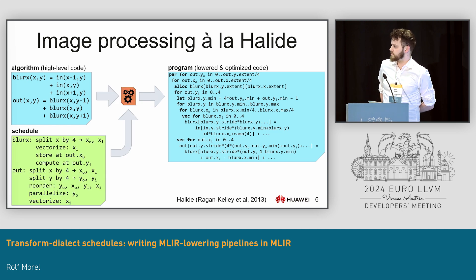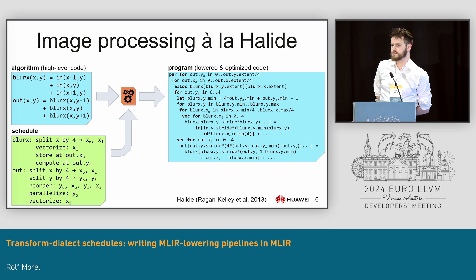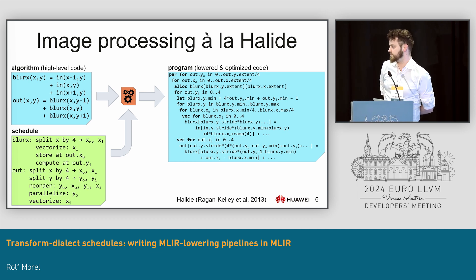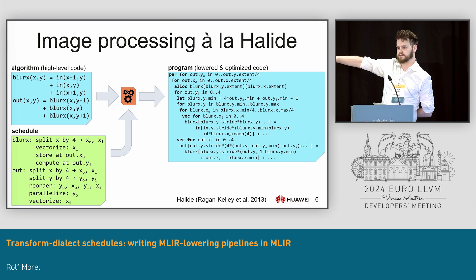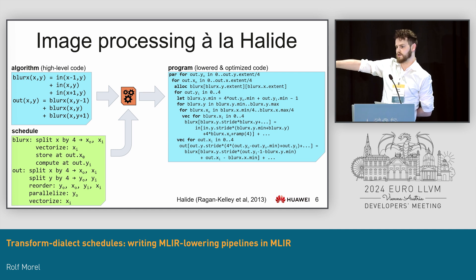If we apply this scheduling notion, the user would just care about writing the high-level algorithm — the thing at the top left in blue — and they would also write a schedule. The schedule describes the kind of lowering and optimization you want: what loops should be tiled, factorized, interchanged, parallelized, and so on. Then there's machinery that takes both the algorithm and the schedule and produces the optimized code. For Halide, they showed that you can get very high-performance code with relatively little effort, because it's much easier to understand, iterate on, and change.